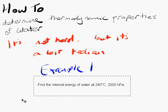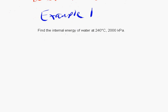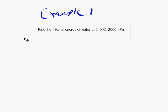The first example that we're going to look at is this: Find the internal energy of water at 240 Celsius and 2,000 kilopascals. So the first thing that I advise you to do, particularly when you're learning this and practicing it, is to draw some kind of a phase diagram.